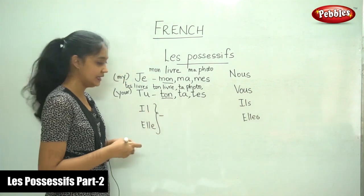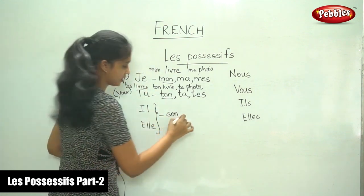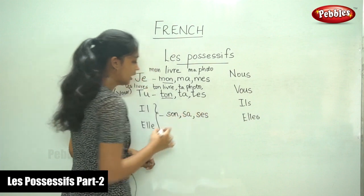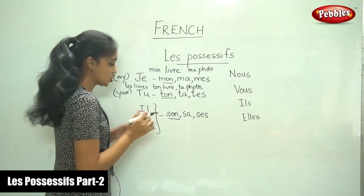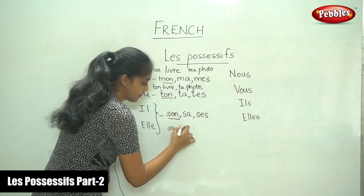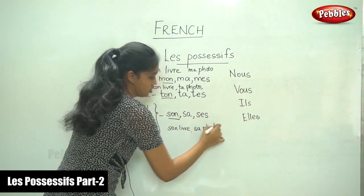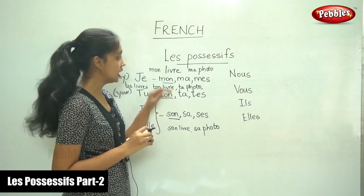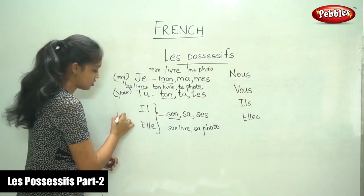For both il and elle, it is son, sa, ses. This depends upon the noun that is following it. So, whether it is il or elle, if it is a masculine noun like livre, you say son livre. Sa is used for a feminine noun — sa photo. You shouldn't get confused here. These three words depend on the noun that follows, not on the subject. So it means his or hers.